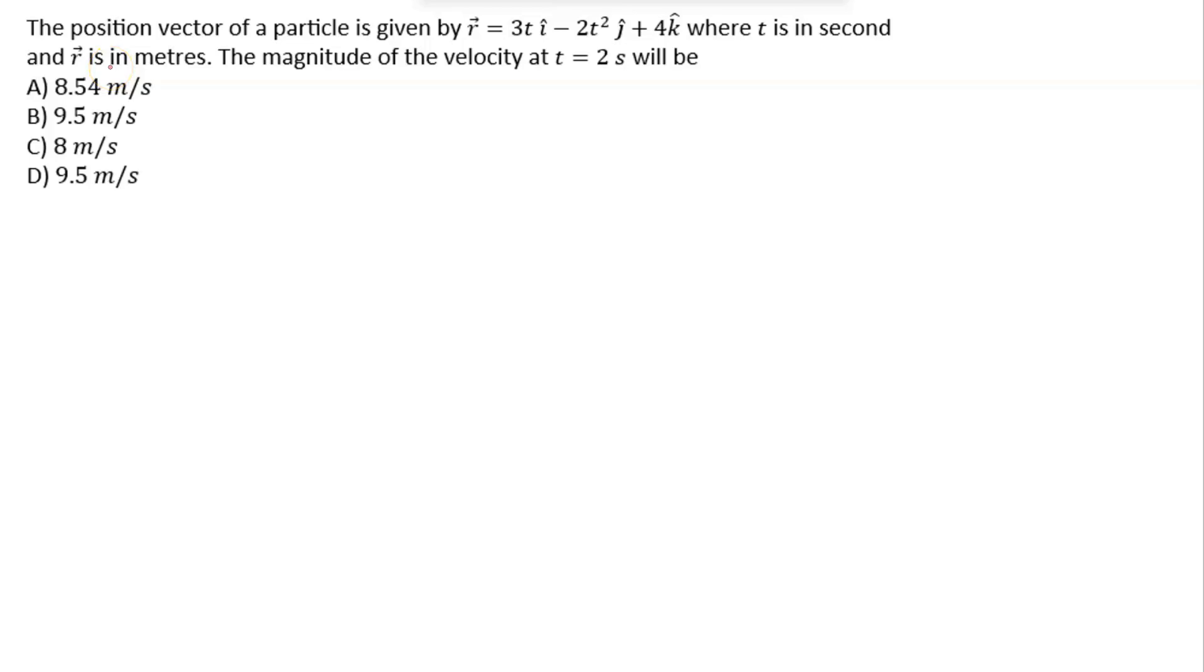Hello everyone, let's understand this question. The position vector of a particle is given by r vector equals 3t i cap minus 2t squared j cap plus 4k cap, where t is in seconds and r is in meters.